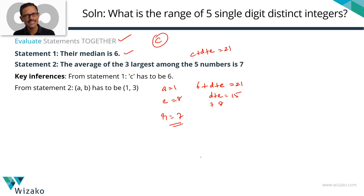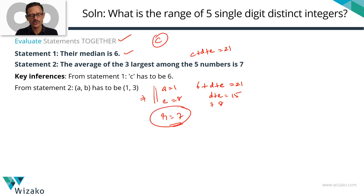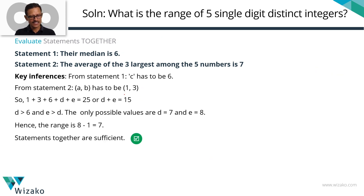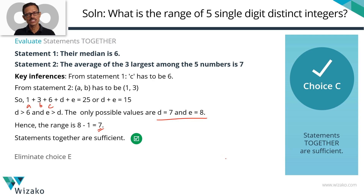The statements together are sufficient, so C is the answer. In this particular example, we ended up getting a unique e and a unique a to arrive at a unique range. In some cases, you need not arrive at a unique e and unique a — as long as the range is unique, it is sufficient. Eliminate E; C is the answer.